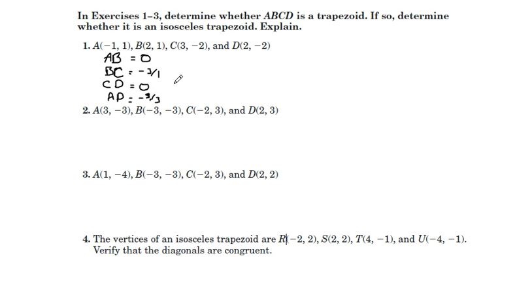So what we have, we have exactly one pair of parallel sides, so this is a trapezoid. This is not an isosceles trapezoid because the slopes of the other two sides — negative three over one and negative three over three — are completely different slopes, so that tells us it's just a regular trapezoid.